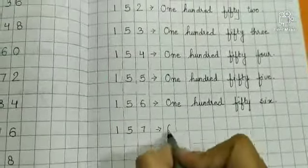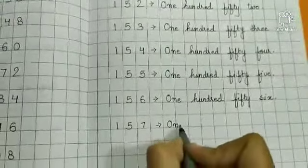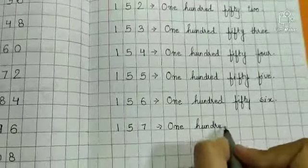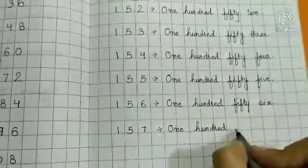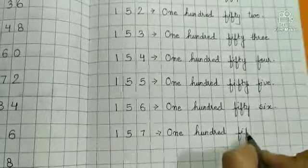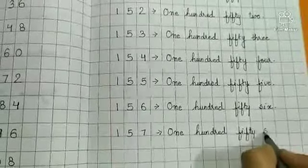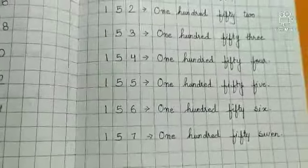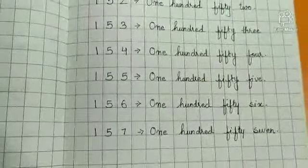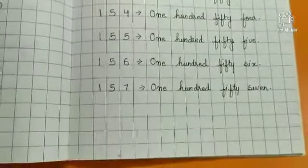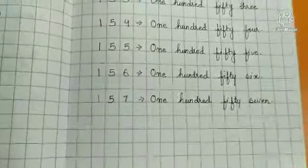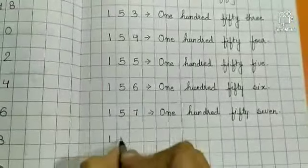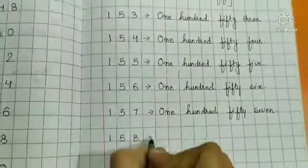Then 157. O-N-E 1, H-U-N D-R-E-D 100, F-I-F-T-Y 50, S-E-V-E-N 7. 157.